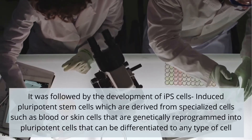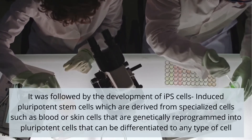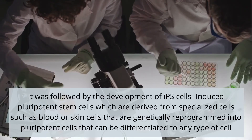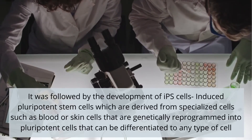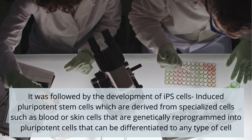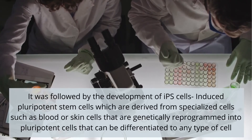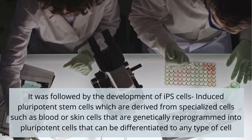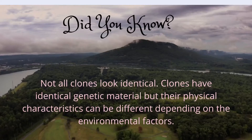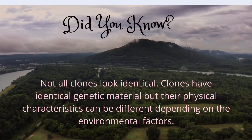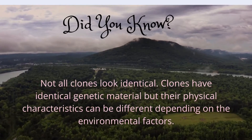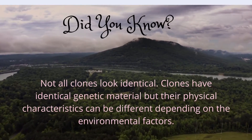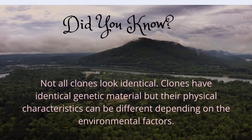This was followed by the development of iPS cells — induced pluripotent stem cells — which are derived from specialized cells such as blood cells or skin cells that are genetically reprogrammed into pluripotent cells that can differentiate into any type of cell. Notably, not all clones look identical: clones have identical genetic material, but their physical characteristics can differ depending on environmental factors.